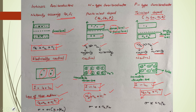Regarding conductivity: the mobility of electrons is greater than that of holes. For an intrinsic semiconductor, sigma = e·n·(μ_e + μ_h). For an n-type semiconductor, the main contribution comes from electrons: sigma = e·n_e·μ_e. For a p-type semiconductor: sigma = e·n_h·μ_h, where μ_h is the mobility of holes.